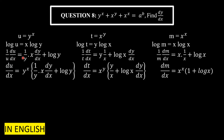This equals the derivative of x·log(y). We apply the product rule: first function x as-is, multiplied by the derivative of log(y), which is (1/y)·(dy/dx), plus second function log(y) as-is, multiplied by the derivative of x, which is 1. So we get: (1/u)·(du/dx) = (x/y)·(dy/dx) + log(y).